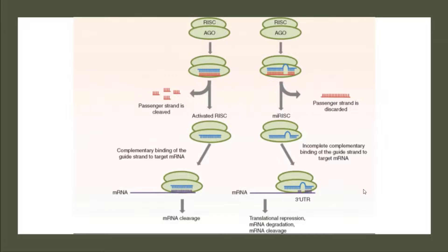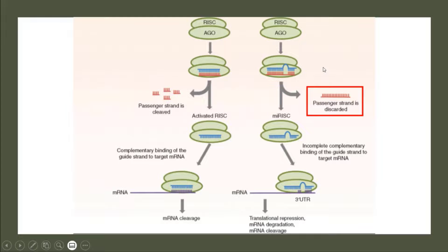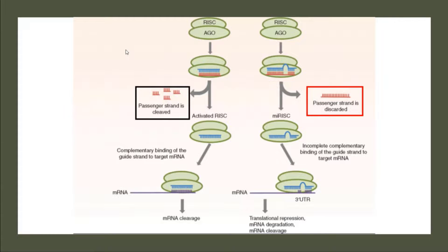Now when these proteins attach themselves with this miRNA and siRNA and make the complex called RISC in both situations, we only need one strand of miRNA and siRNA to get activated. So the passenger strand in miRNA is just discarded in this situation, but the siRNA passenger strand cleaves itself. That's the third difference between the two RNAs.